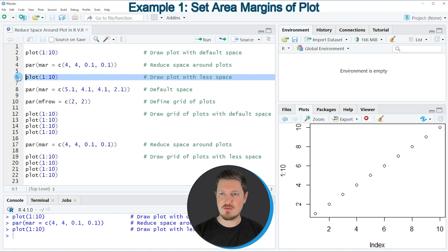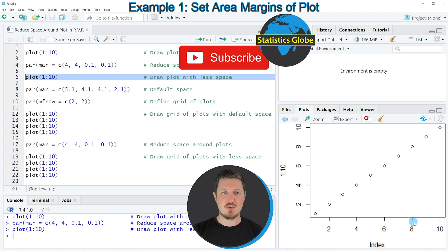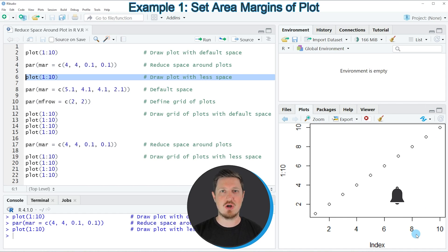If you run this line of code, you can see at the bottom right that we have created a new version of our plot where the space, especially on the upper and on the right side of the plot, has been reduced. So in this first example, I have shown you how to reduce the space around one plot.